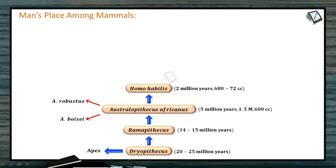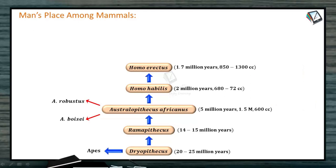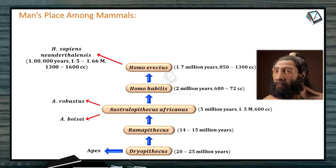Homo habilis gave rise to Homo erectus, more like the modern-day human being, about 1.7 million years ago. From Homo erectus, one group emerged: Homo sapiens. Now, you must have heard about Neanderthal man — Homo neanderthalensis — about 1.5 to 1.6 million years ago.